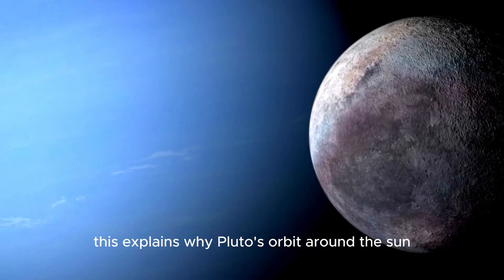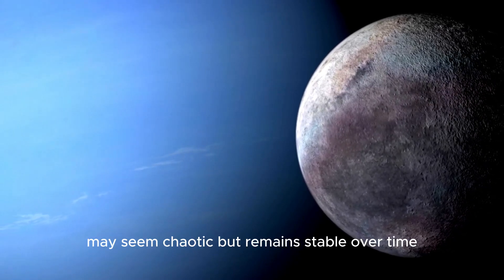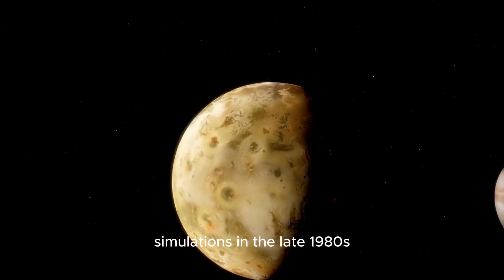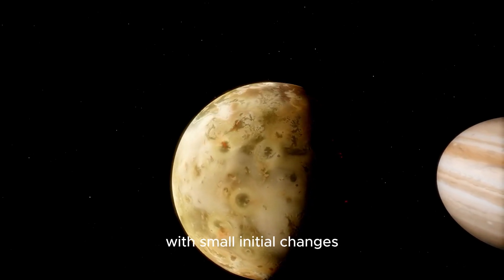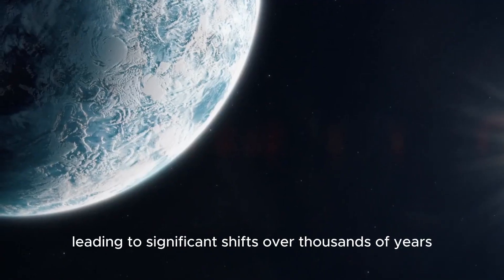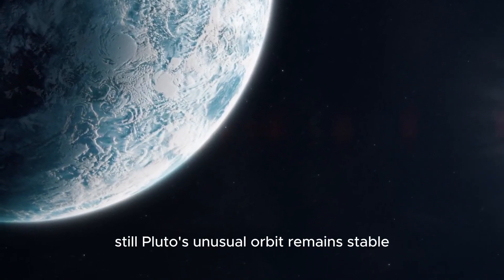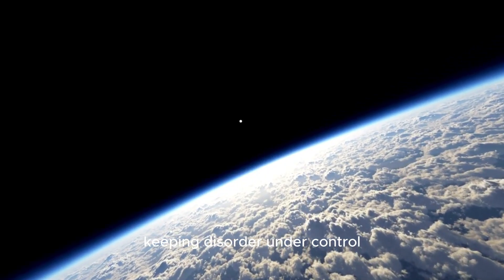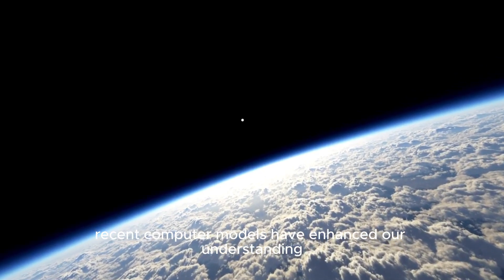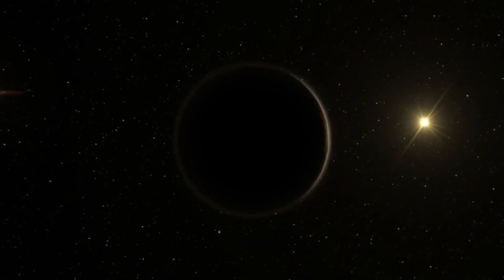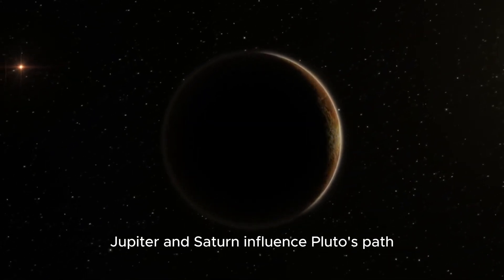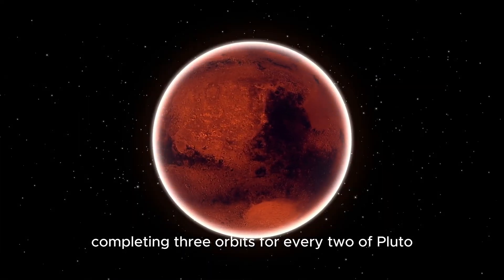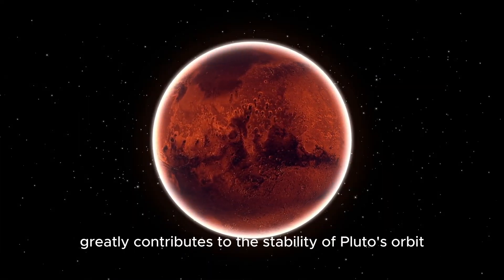This explains why Pluto's orbit around the Sun may seem chaotic but remains stable over time. Despite its seemingly random nature, simulations in the late 1980s revealed that Pluto's orbit is actually chaotic, with small initial changes leading to significant shifts over thousands of years. Still, Pluto's unusual orbit remains stable over incredibly long periods. Recent computer models have enhanced our understanding of how large planets like Neptune, Jupiter, and Saturn influence Pluto's path. Neptune's unique relationship with Pluto, completing three orbits for every two of Pluto, greatly contributes to stability.